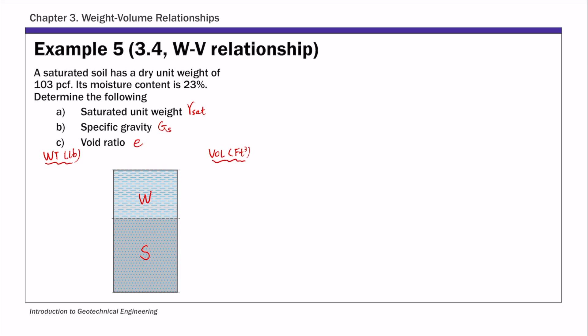We're going to first complete this phase diagram, then calculate these quantities. For this example, everything is given in terms of ratios — dry unit weight is a ratio, moisture content is a ratio, and all the unknowns are ratios. As I mentioned, if everything is given in terms of ratios, it is safe to assume the total volume is one. So for this example, I am going to assume the total volume V equals one.